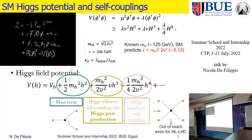According to the standard model, if the Higgs mass is 125 GeV, this lambda value should be about 0.13. We parametrize this via a Kappa factor, kappa_lambda, which is the lambda observed divided by the lambda value expected by the standard model. So we need to measure it, and any deviation from this value could be a sign of new physics.